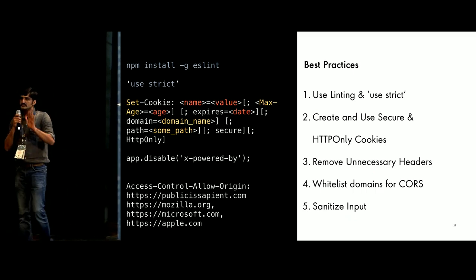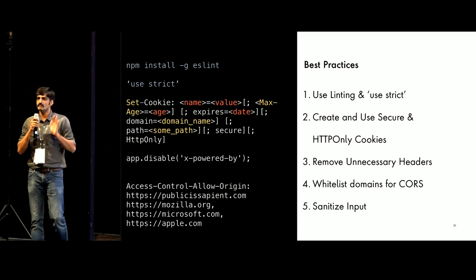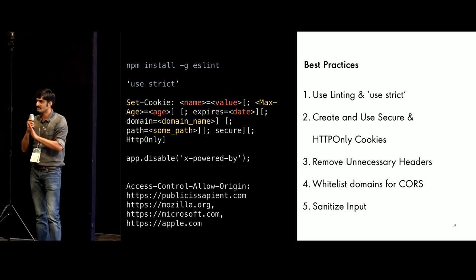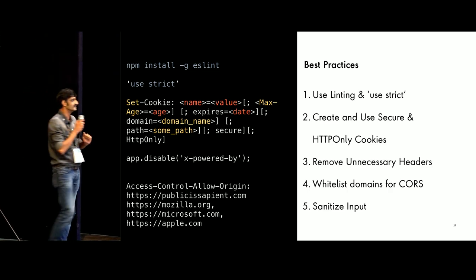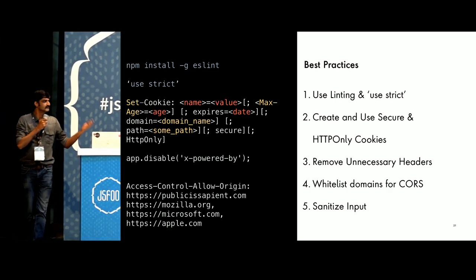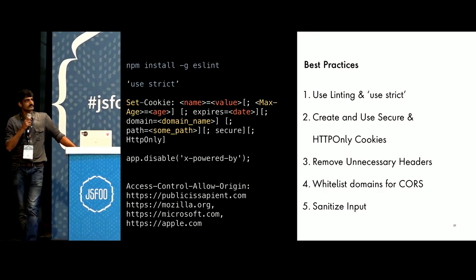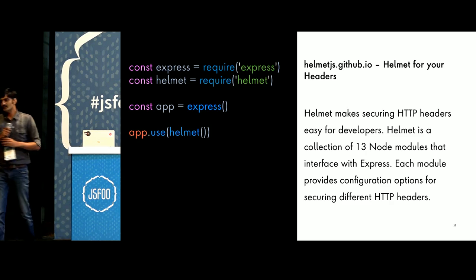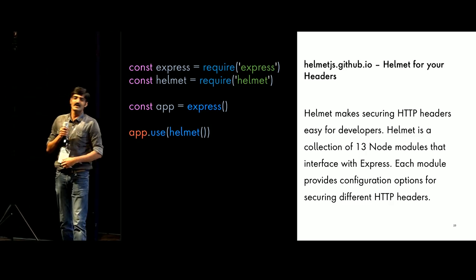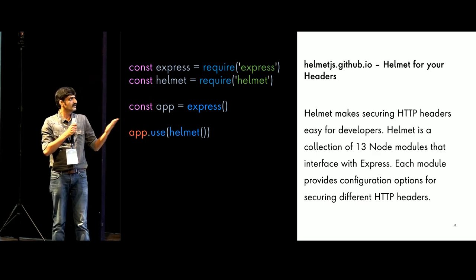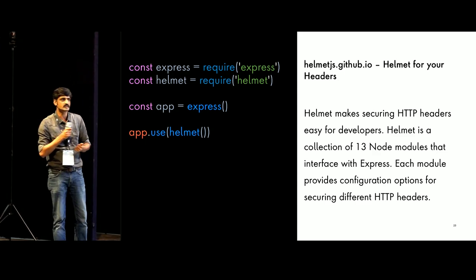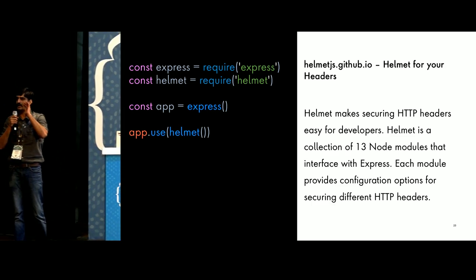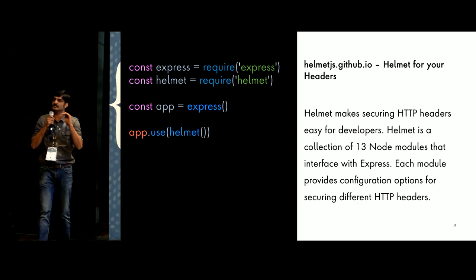Best practices always come in handy when it comes to security, performance, accessibility — anything related to non-functional requirements, though I believe those should be functional requirements. So: use linting, whitelist your CORS, sanitize input, use HTTP-only cookies. For securing headers, helmet comes as a very good middleware package you can use in your Node application. With just a single line — app.use(helmet) — you are secure, and n number of headers are already set for your application.